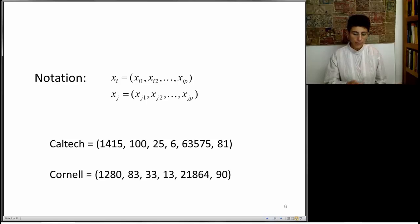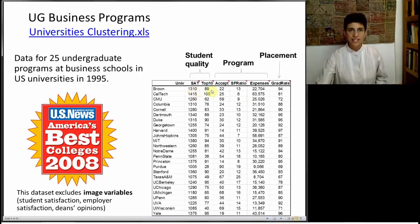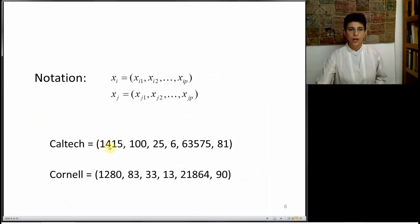And if you go back to the previous slide, I'm just collecting the numbers that were in the table. So for instance, when we looked at SAT and top 10 and acceptance ratio, these were 1415, 125 for Caltech. And similarly, 1280, 83, and 33 for Cornell. I'm going to use the notation x sub i for one observation, and x sub j for another observation. In this case, Caltech and Cornell. And I'm writing down their entire profile, their entire set of measurements, as a vector, as a series of these numbers.